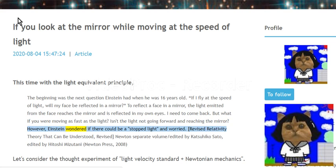Isn't the light not going forward and reaching the mirror? However, Einstein wondered if there could be a stopped light and worried. Revised Relativity Theory That Can Be Understood, revised Newton, separate volume edited by Katsuhiko Saito, edited by Hitoshi Mizutani, Newton Press, 2008.